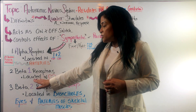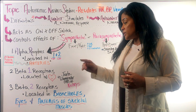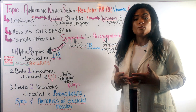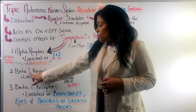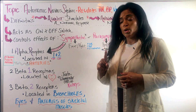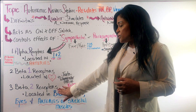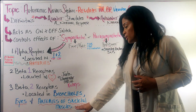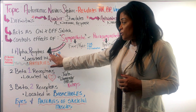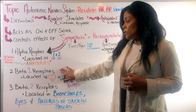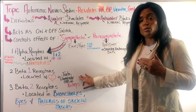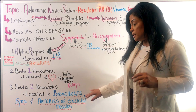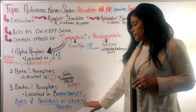The beta-1 receptors are located in your heart — one for one heart — as well as the juxtaglomerular cells of your kidneys. These cells are in charge of the release of renin, which starts the RAAS system and in turn increases your blood pressure. The beta-2 receptors are located in your lungs — two for two lungs — specifically for your bronchioles, as well as your eyes and the arteries of the skeletal muscle.